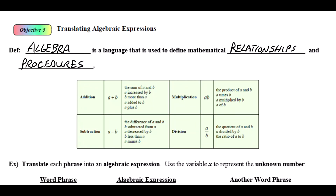When we're translating algebraic expressions, we have to realize that algebra is a language that is used to define mathematical relationships and procedures. What we want to learn how to do is translate English to algebra. There are a lot of ways in English that we can represent a mathematical operation or procedure. Let me zoom in on this — we can look at it in the textbook.